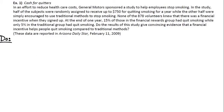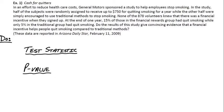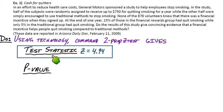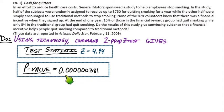Time for the do step — time to crunch some numbers. We need the test statistic and the P-value. We'll use the calculator and run the 2-prop Z-test command. Running that correctly gives us a test statistic Z-score of 4.94 and a P-value of a really, really small number — approximately 0.0000381.